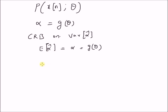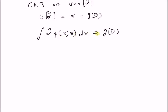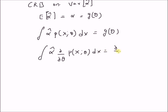By definition, the expectation of alpha-hat equals the integral of alpha-hat times the probability distribution P(x; theta) dx, which equals G(theta). By differentiating both sides with respect to theta, we have the integral of alpha-hat times the partial derivative with respect to theta of P(x; theta) dx, equal to the derivative of the function G(theta).